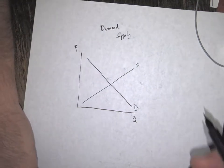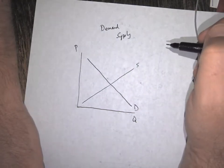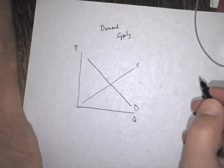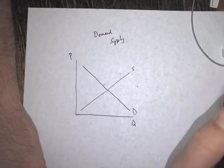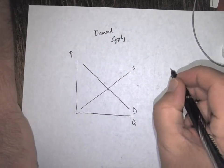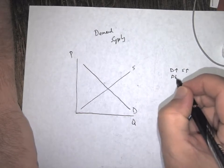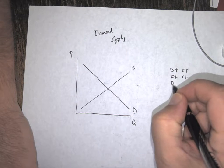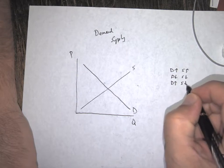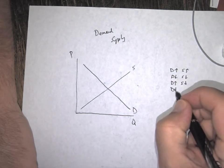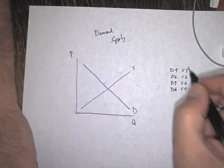All right, so what we're looking at now is a question that has a simultaneous shift. Remember there are four possibilities, and drawing it out is going to be your best thing to do because you could have demand up supply up, demand supply down, demand up supply down, or demand down and supply up. So you got all those combinations.